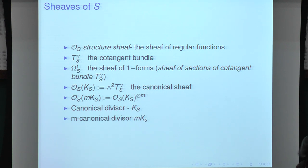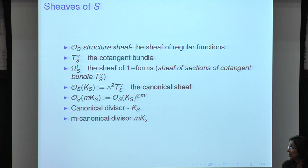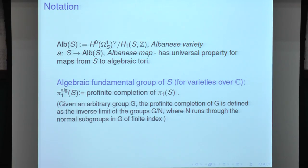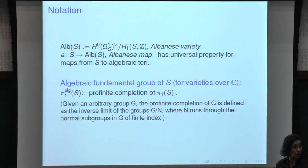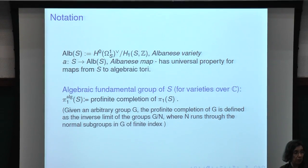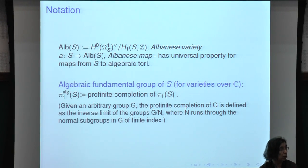Surfaces can be equipped with lots of interesting sheaves. We have the structure sheaf, the cotangent bundle omega-1, the sheaf of sections of the cotangent bundle, the canonical sheaf, and the pluricanonical sheaves. We also have the canonical divisor and the m-canonical divisors. We have the Albanese variety of S, and we always have the Albanese map from the surface to the Albanese variety, which has the universal property respecting maps from S to abelian varieties.